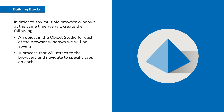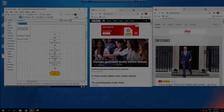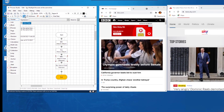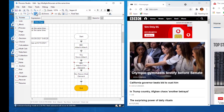In order to spy multiple browser windows at the same time, we will create the following: an object in the Object Studio for each of the browser windows we will be spying, and a process in the Process Studio that will attach to the browsers and navigate to specific tabs on each. Now we'll go to Process Studio and look at the process that allows us to spy multiple browser windows at the same time.